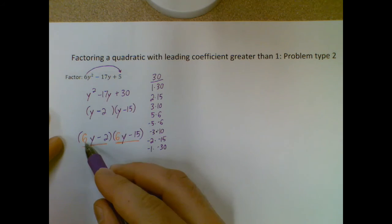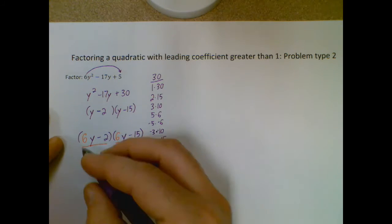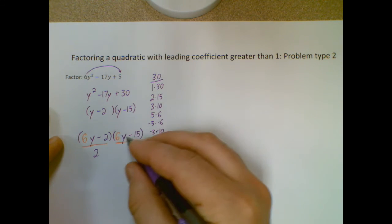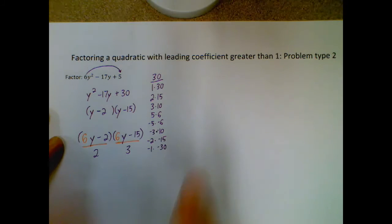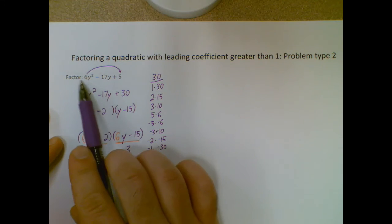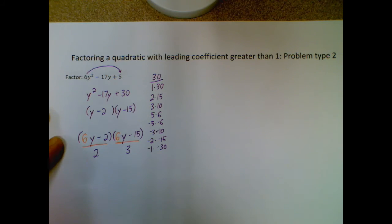Looking at this, what's the greatest common factor of 6y and 2? That's 2. So I'm going to divide both of those by 2. And here, 6y and 15 is 3. If you did this correctly, these numbers multiplied together should give you that number that you moved originally, just as a general check.